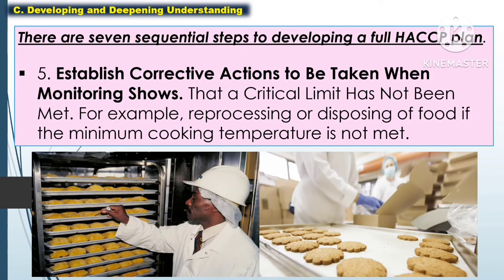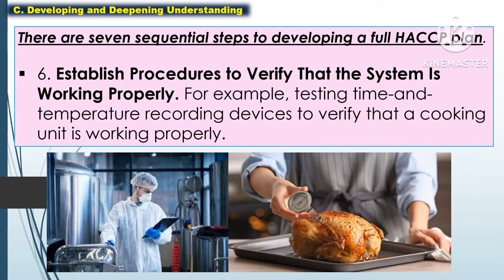The fifth step is to establish corrective actions to be taken when monitoring shows that a critical limit has not been met. For example, reprocessing or disposing of food if the minimum cooking temperature is not met.